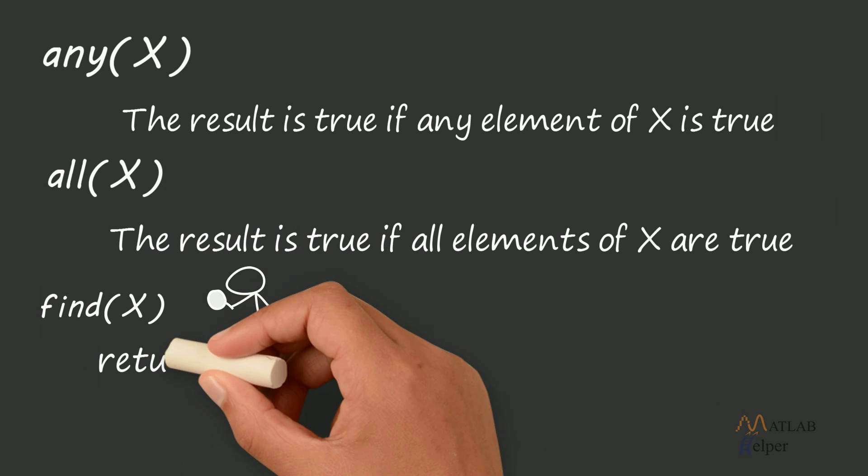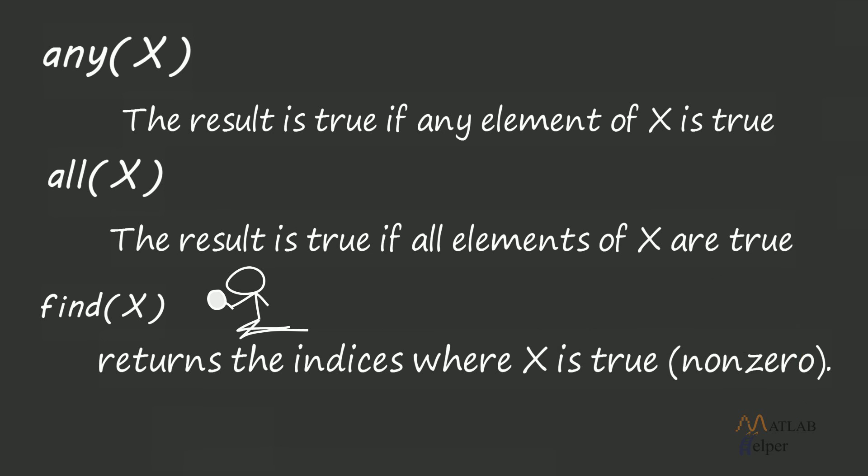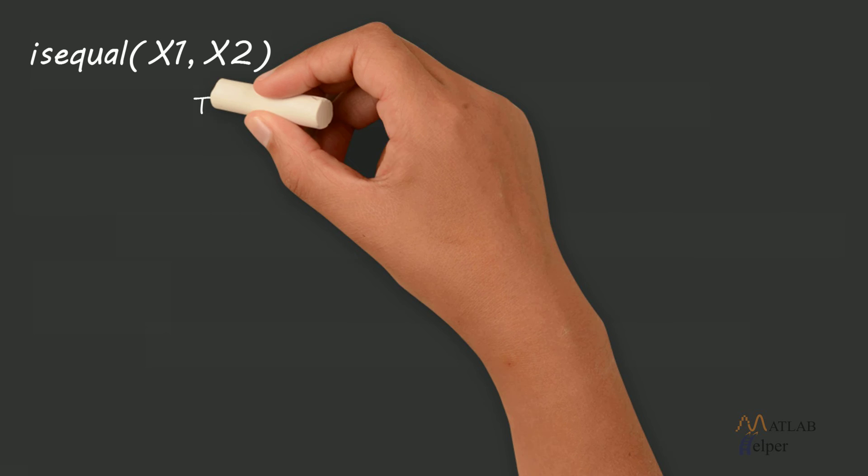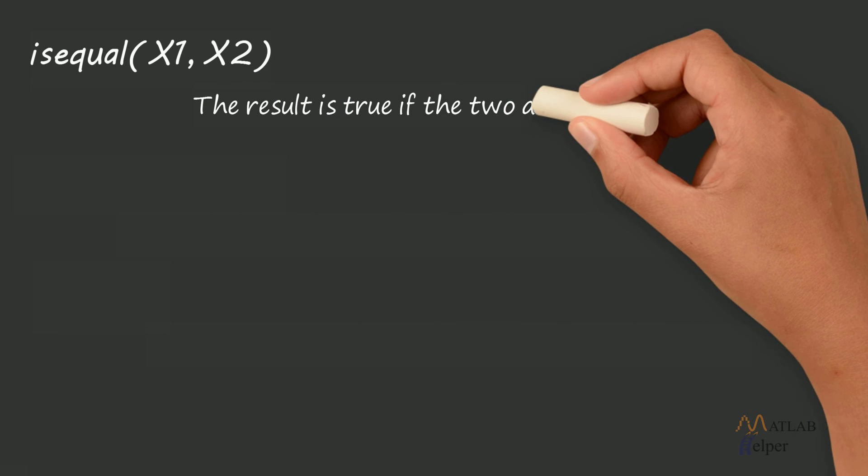Find X: Returns the indices where X is true. isequal X1, X2: The result is true if the two arrays are equal.